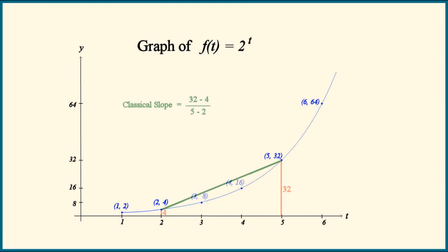The classical slope is expressed as the difference in the y values over the difference in the t values. By restricting ourselves to unit intervals on the t-axis, the slope simply equals the difference in the y values.